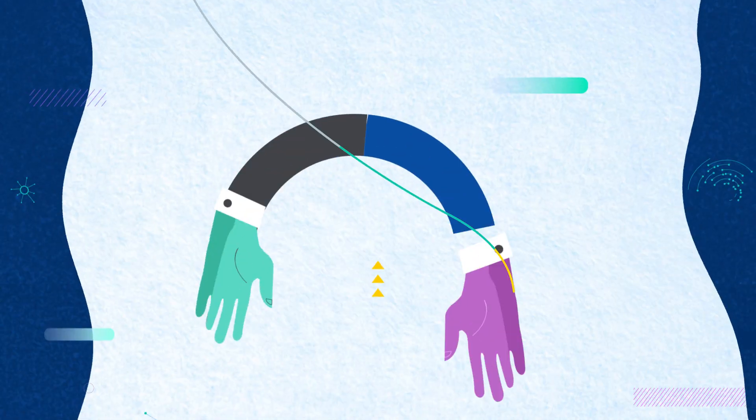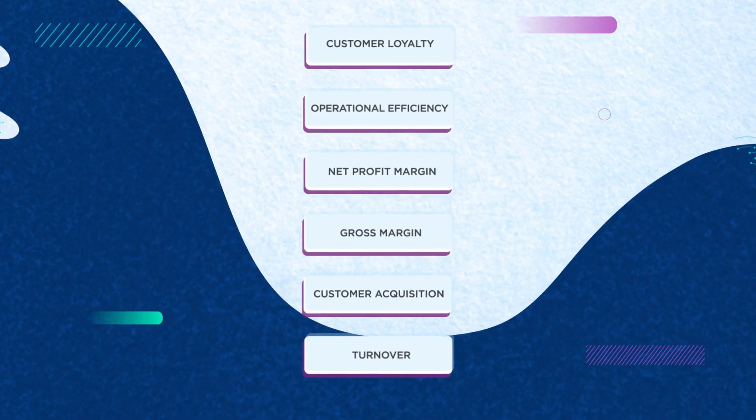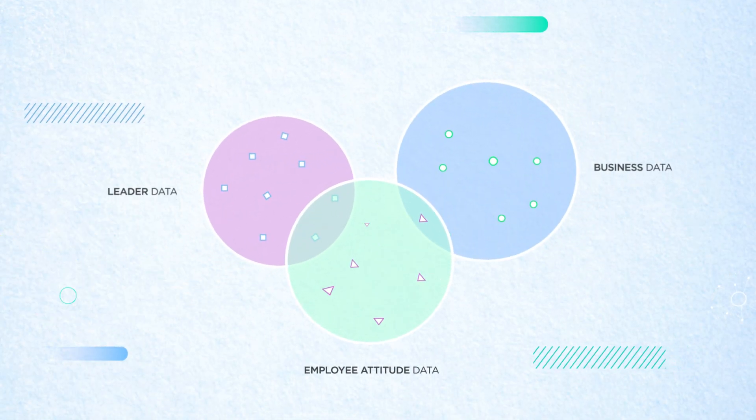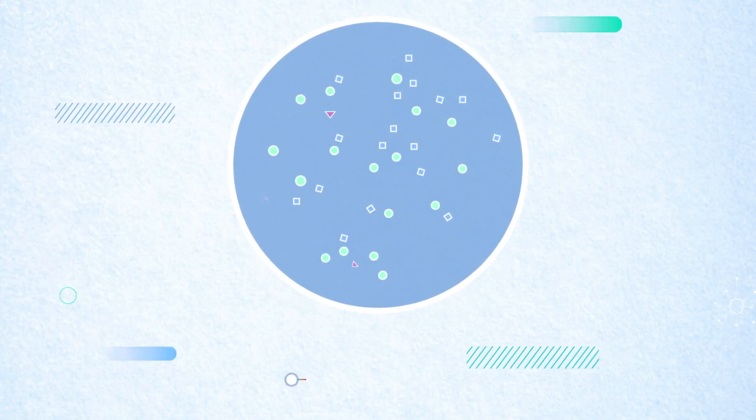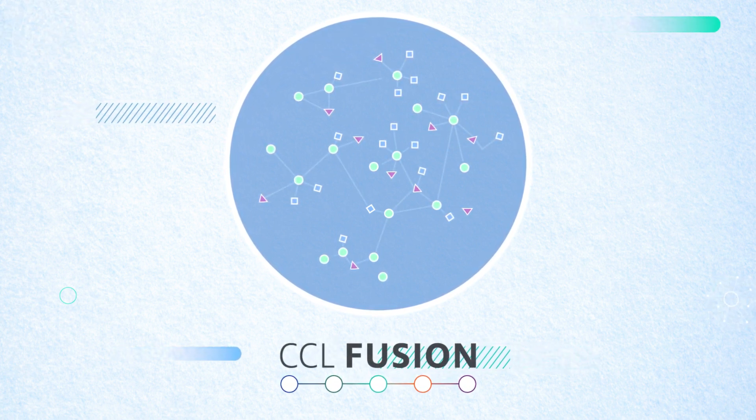Here's how it works. CCL partners with you to identify and prioritize two to three critical business outcomes, assemble the relevant data, and create a predictive model identifying the leadership behaviors with the greatest impact on the selected business outcomes.